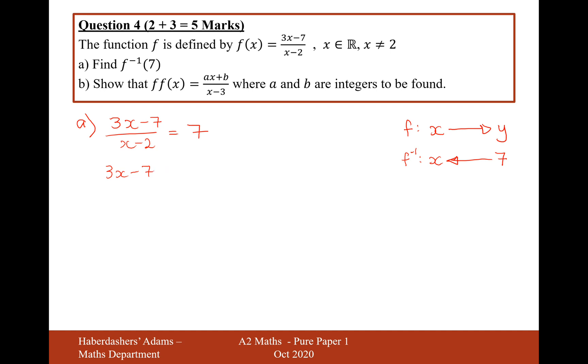3x minus 7 equals 7x minus 14. Move all the x's onto the right-hand side. Move your 14 onto the left-hand side. That will now be 7. So it will be 7 over 4 as your value for x.